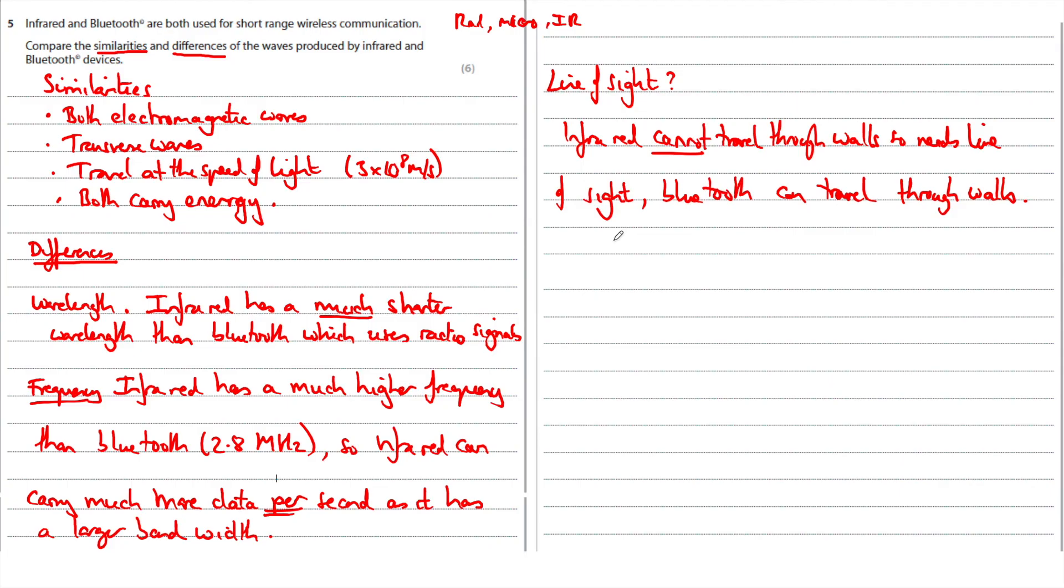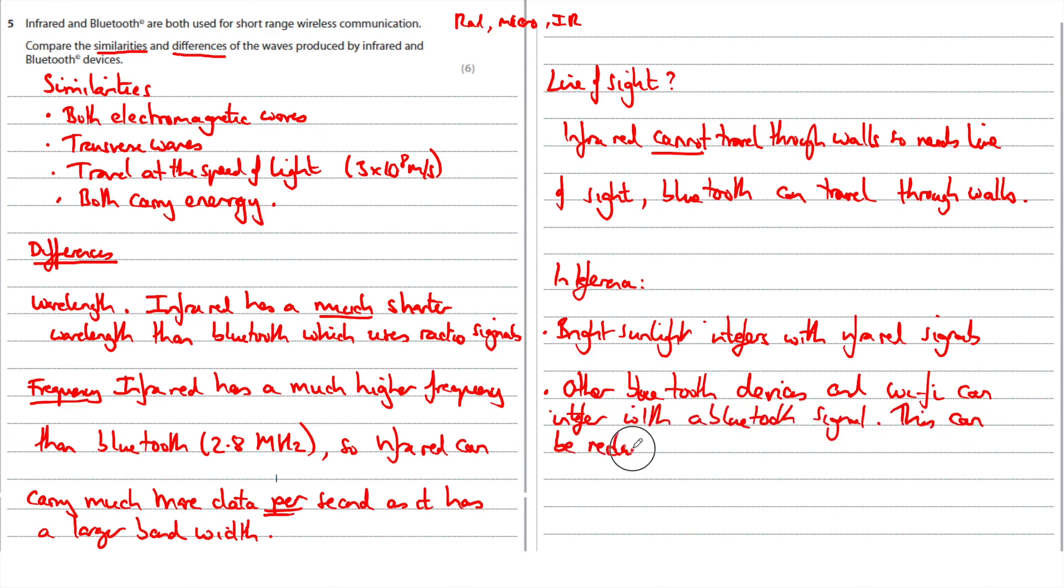The last thing to consider is interference and what differences there are. So infrared suffers from interference from bright sunlight and Bluetooth has to use frequency hopping because it can interfere with other Bluetooth devices or Wi-Fi which also use the same frequency. Interference. Bright sunlight interferes with infrared signals. Other Bluetooth devices and Wi-Fi can interfere with a Bluetooth signal. This can be reduced by frequency hopping.